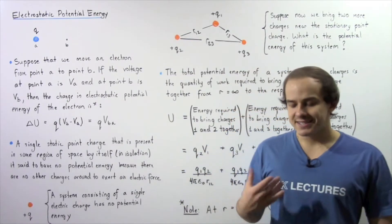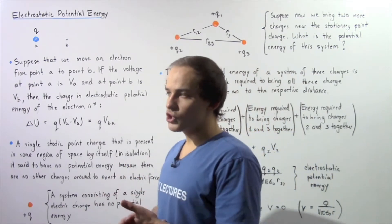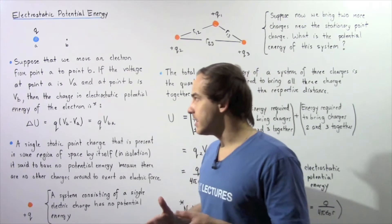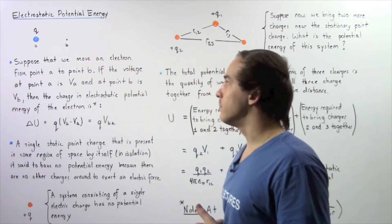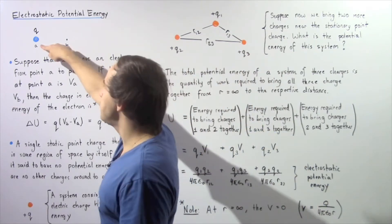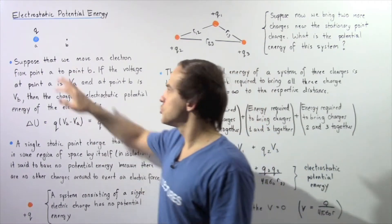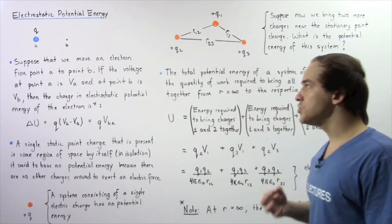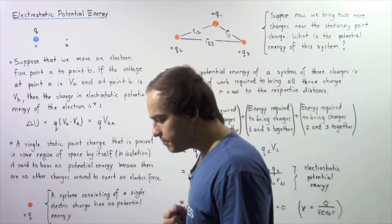Electrostatic potential energy is essentially the potential energy that exists between electric charges which are found in relative close proximity. Let's begin by looking at the following diagram. Suppose we have a single electron which is found at point A and this electron has a quantity of charge given by lowercase q. We want to move this single electron from point A to point B.